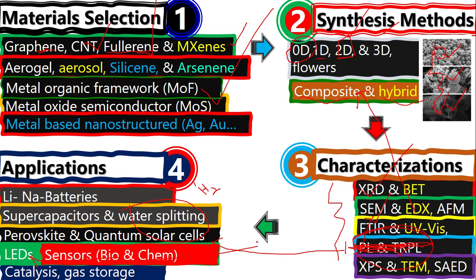In the coming videos, I will thoroughly explain all these steps. Step number one: how you will select your material — where you will get information, whether from your colleague, your teacher, by yourself, or through literature review — how you will know which material is best. Then, how you will find good research groups. I will explain all these things in the coming videos.